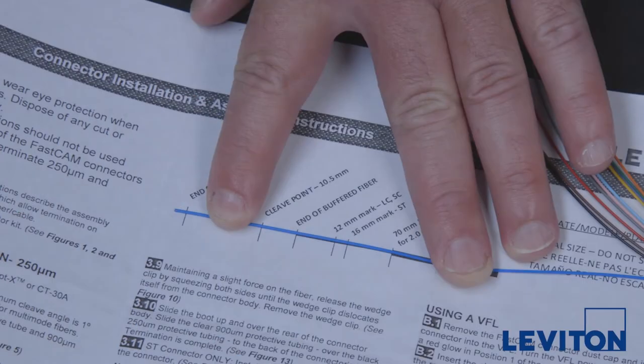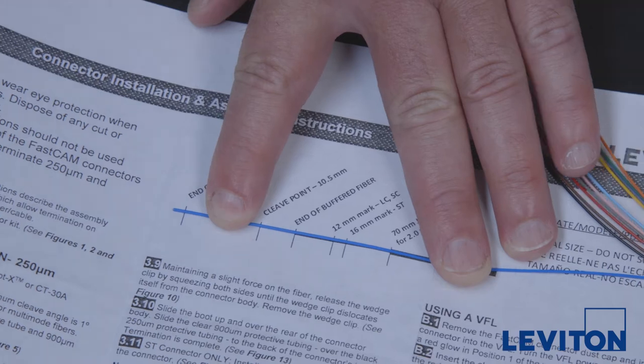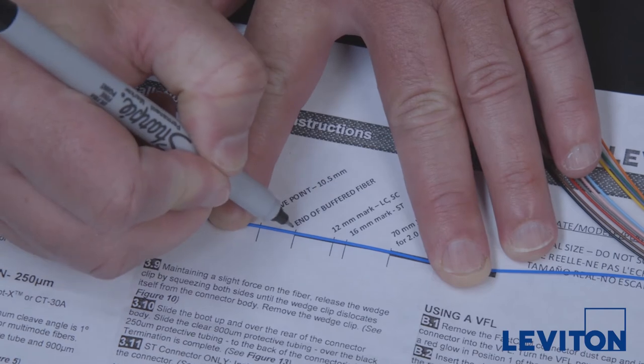Make sure a sufficient length of 250 micron bare fiber is exposed. Leviton recommends at least 35 millimeters. This required length may vary based on the style of precision cleaver being used. Refer to the cleaver manufacturer documentation for specific requirements.